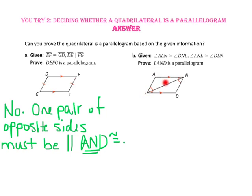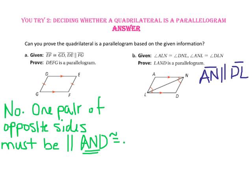In part B, it is given that angle ALN is congruent to angle DNL, and angle ANL is congruent to angle DLN. Can we prove quadrilateral LAND is a parallelogram? Because of the parallel symbols, segment AN is parallel to segment DL. Since angles ALN and DNL are alternate interior angles that are congruent, segment AL is also parallel to segment DN. Since both pairs of opposite sides are parallel, quadrilateral LAND is a parallelogram.